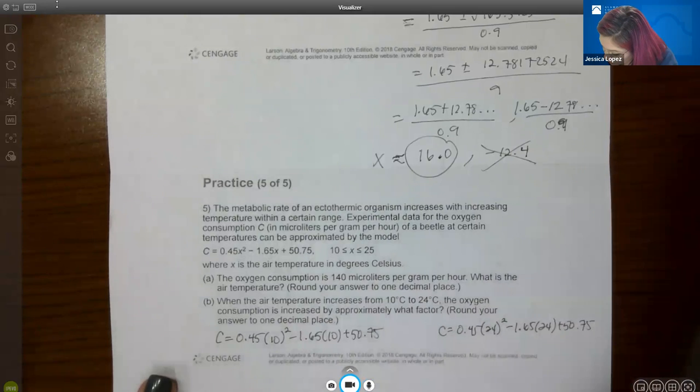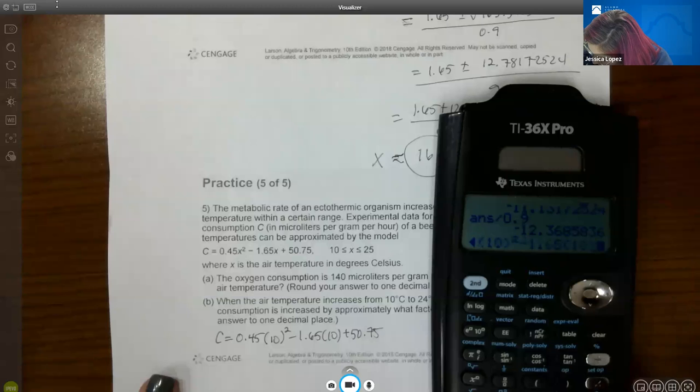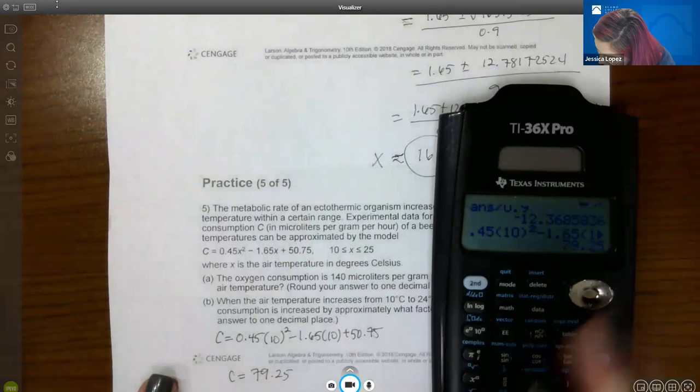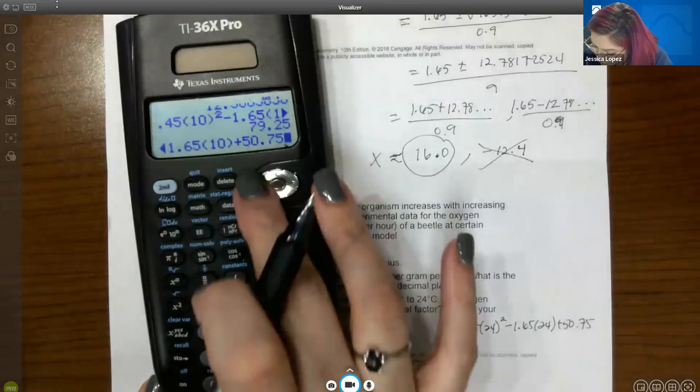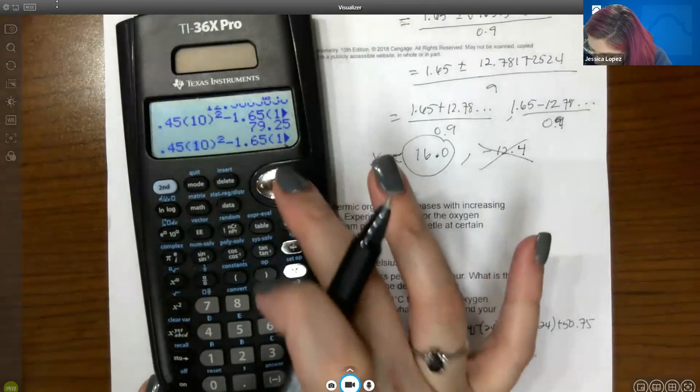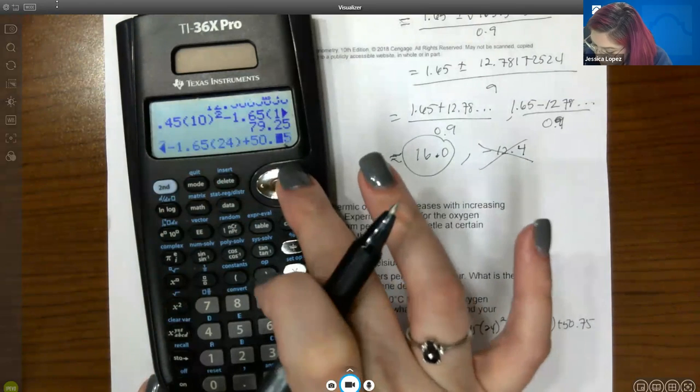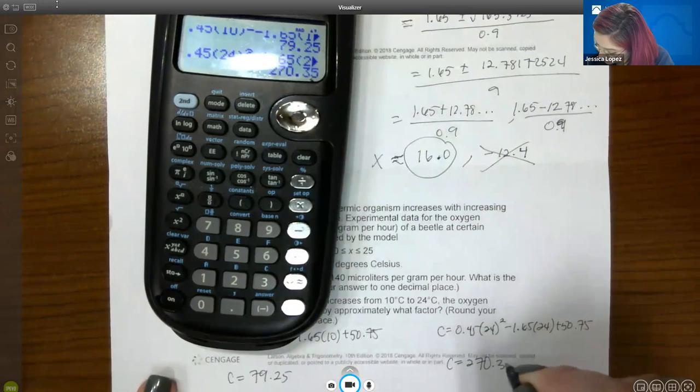So for the first one, we have 0.45 parentheses 10 squared minus 1.65 times 10 plus 50.75. And so we get 79.25. Whereas if we plug in 24, we get 270.35.